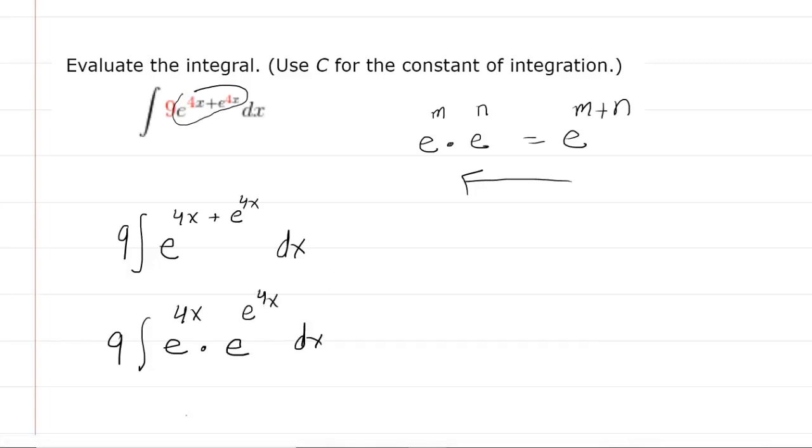Just pause the video if you need to to make sure that makes sense. Remember, when you multiply these exponential expressions, you end up adding the powers. And indeed, 4x plus e to the 4x would equal this power right here. So that is a legitimate way and a useful way of rewriting the problem because now we can begin to apply a u substitution.